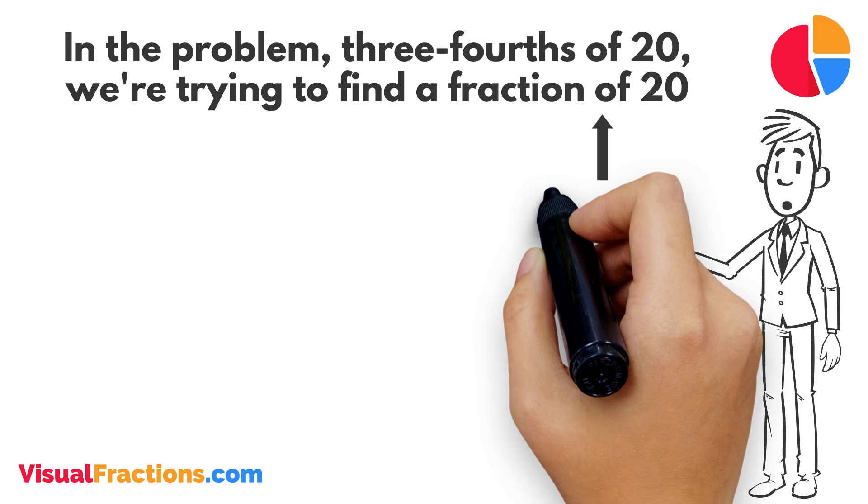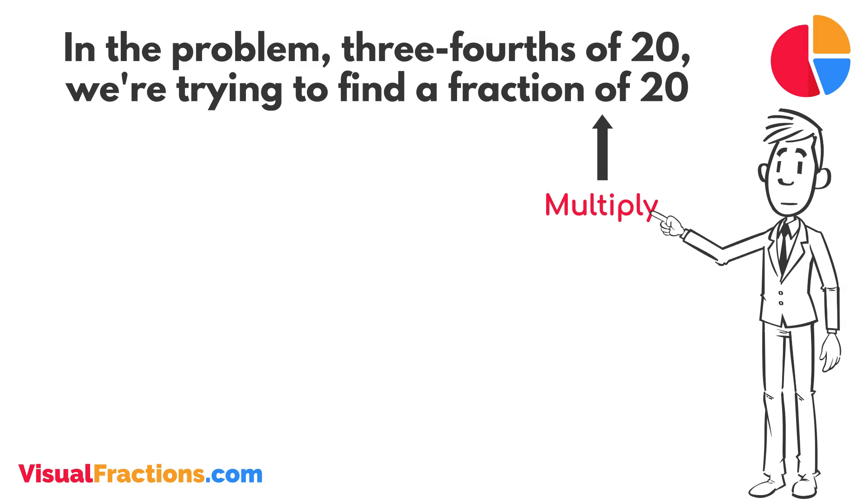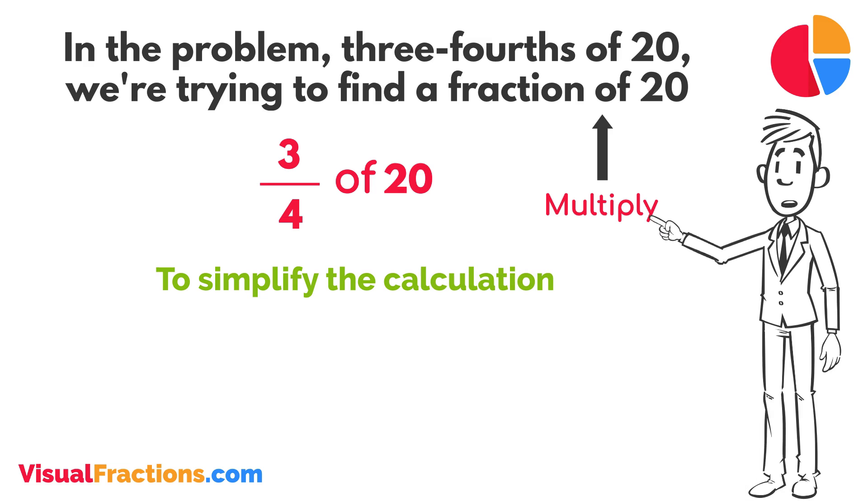The word of in mathematics typically means to multiply, so we rewrite our problem as multiplication, 3 quarters times 20. To simplify the calculation, we first convert our whole number into fraction form, writing 20 as 20 over 1.